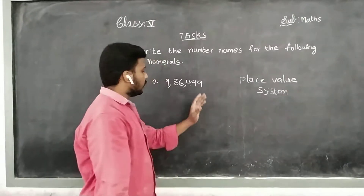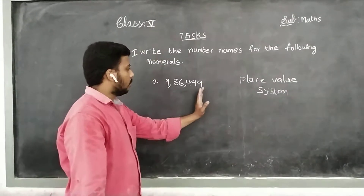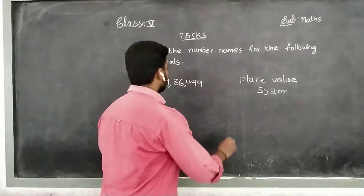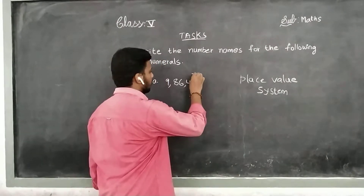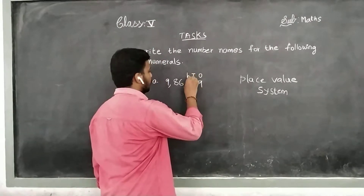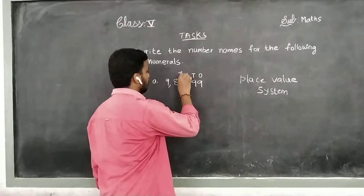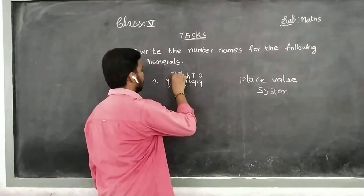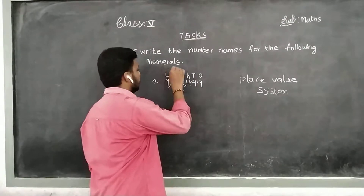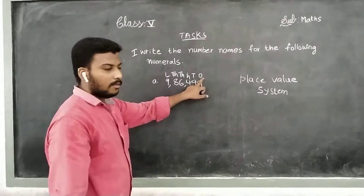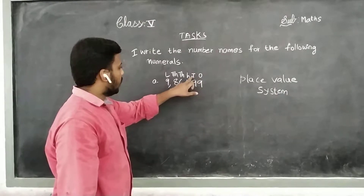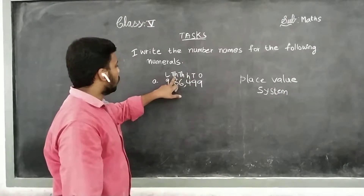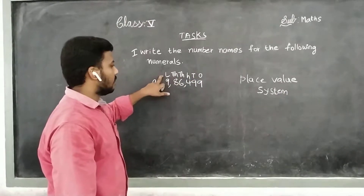We have to start from the right side. That is: ones, tens, hundreds, thousands, ten thousands, and lakhs. Children: ones, tens, hundreds, thousands, ten thousands, and lakhs.